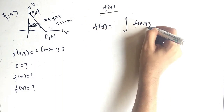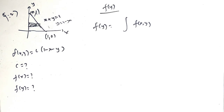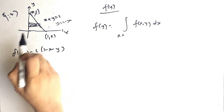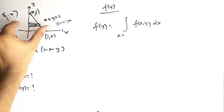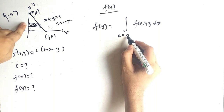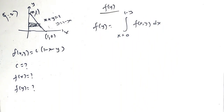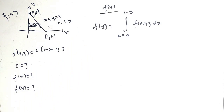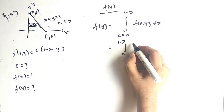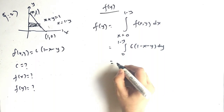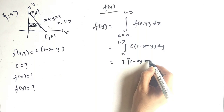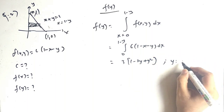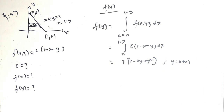Now we find small f of y. We eliminate x by integrating f of x comma y with respect to x. Using the horizontal strip, x goes from 0 to (1 minus y). The integral is from 0 to (1 minus y) of 6(1 minus x minus y) dx. Solving this gives 3(1 minus 2y plus y squared), and y ranges from 0 to 1.